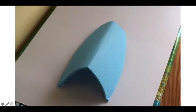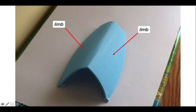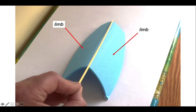Let's get a visualization first of all. Here we've got a fold — it's a bit of kitchen sponge. Let's look at its structure. It has two limbs, one on each side, and the intersection between those limbs is the hinge.